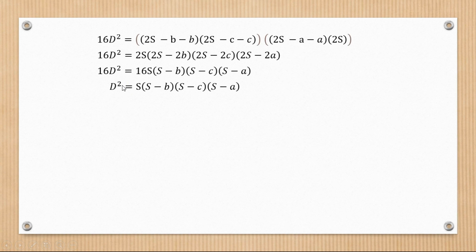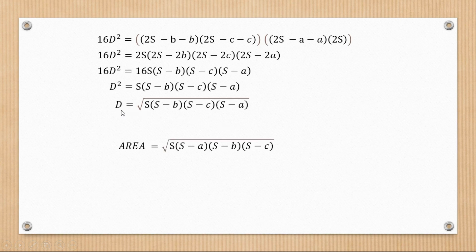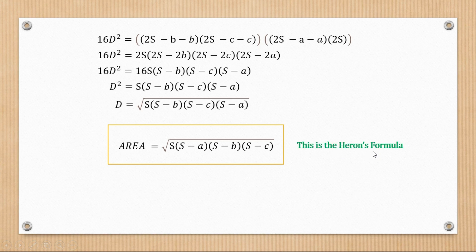After dividing by 16, we remain with D² = s(s − a)(s − b)(s − c). Taking the square root, D equals the square root of s(s − a)(s − b)(s − c). Since D represents area, the area equals √[s(s − a)(s − b)(s − c)]. This is what we call Heron's formula, which is used to find the area of triangles.